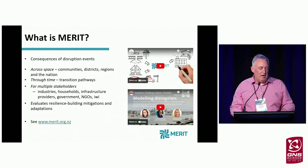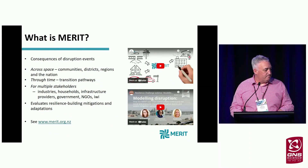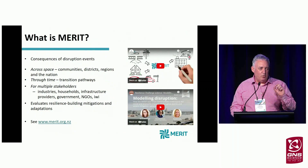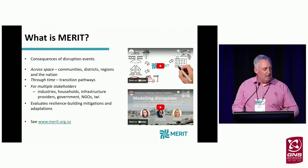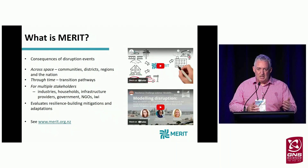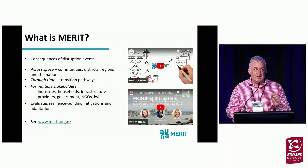MERIT operates for multiple stakeholders — across industries, different types of households, different infrastructure providers, government, not-for-profit organisations, and also for Indigenous people here in New Zealand, for iwi. The good thing is it can do this with and without mitigation and adaptation options built in. We can model what happens if we harden our infrastructure, how we may adapt over time to an event, and put in place processes for communities. We can also do it through the process of cascading and coincident hazards — which is really important.